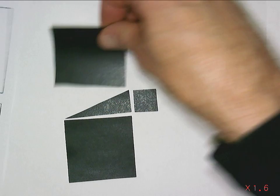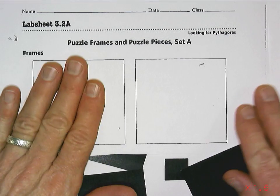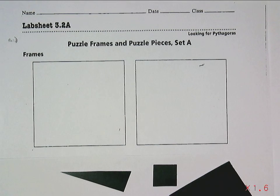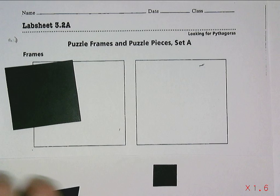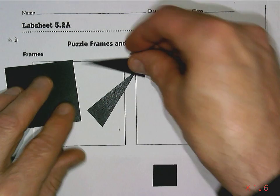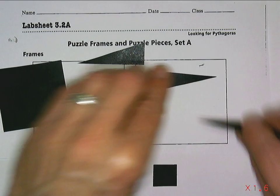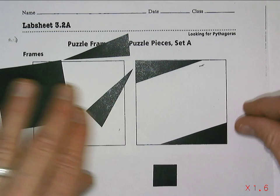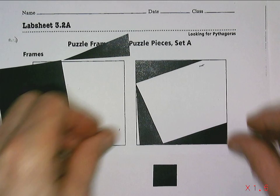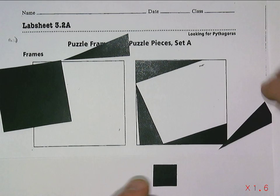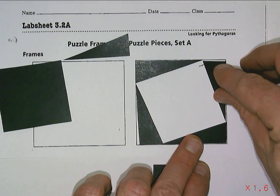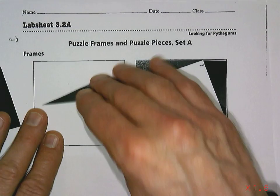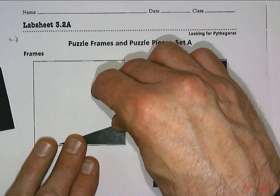What we're going to do is use these two squares, which have identical areas — they're exactly the same size. I actually have a whole bunch of these little triangles. I'm going to take four of these triangles and place them in one of the squares like so, and the other four and fit them into the other square a little different way.